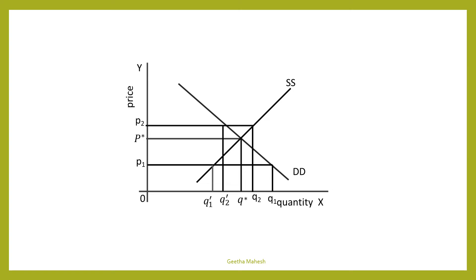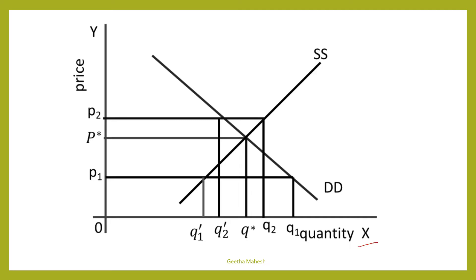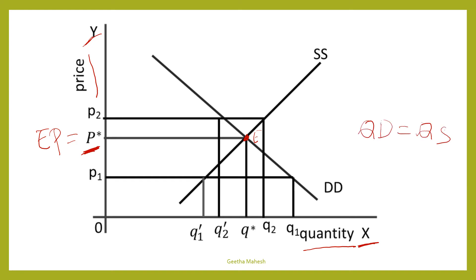Now let us understand market equilibrium with the help of our diagram. On the x-axis quantity and on the y-axis price is measured. You can see at P star, the quantity demanded is equal to quantity supplied, which we call the equilibrium position. P star is the equilibrium price — the price at which quantity demanded equals quantity supplied. At point E, demand is equal to supply — our demand curve intersects the supply curve.